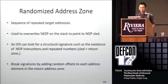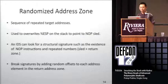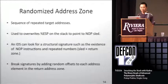Randomized return zones: the randomized return address zone is a sequence of repeated target addresses pointing to the no-op sled. When you write a simple stack exploit, you hope one of these addresses overrides the EIP on the stack. The basic way to randomize this zone is to add random offsets to each individual address component, completely breaking signatures.